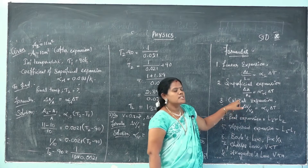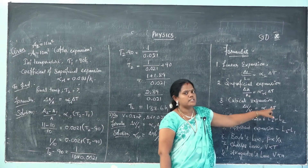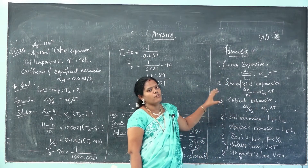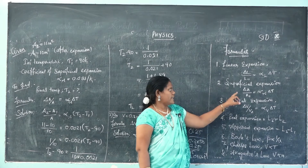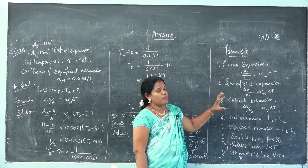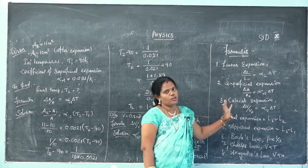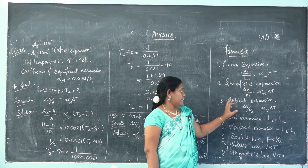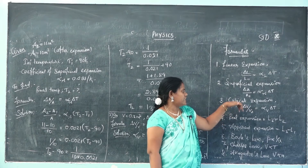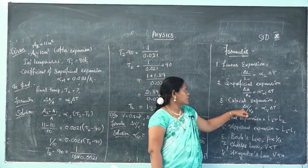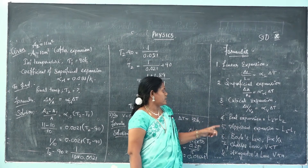Cubical expansion: change in volume by original volume equals the coefficient of cubical expansion into change in temperature. So expansion in length, expansion in area, and expansion in volume when heat is applied — for volume, delta-V by V-naught equals alpha-V into delta-T. For liquid expansion there are two types: real expansion and apparent expansion.